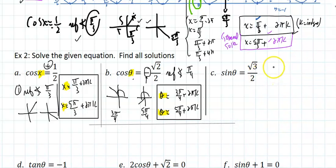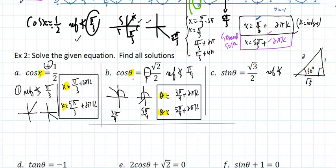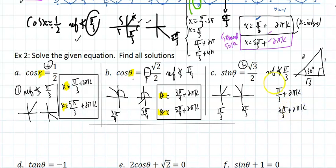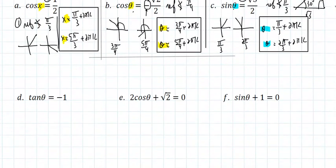What if sin θ = √3/2? The reference angle — sine equals √3/2 at 60 degrees, so the reference angle is π/3. Where is sine positive? Quadrant 1 and quadrant 2. In quadrant 1 it's the reference angle π/3; in quadrant 2 it is 2π/3. So the answer is π/3 + 2πk or 2π/3 + 2πk, with the angle coming in at the last step.